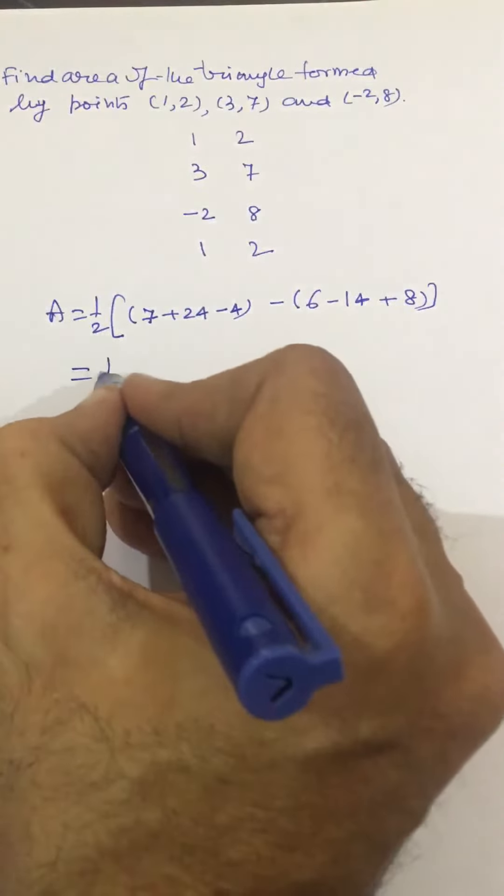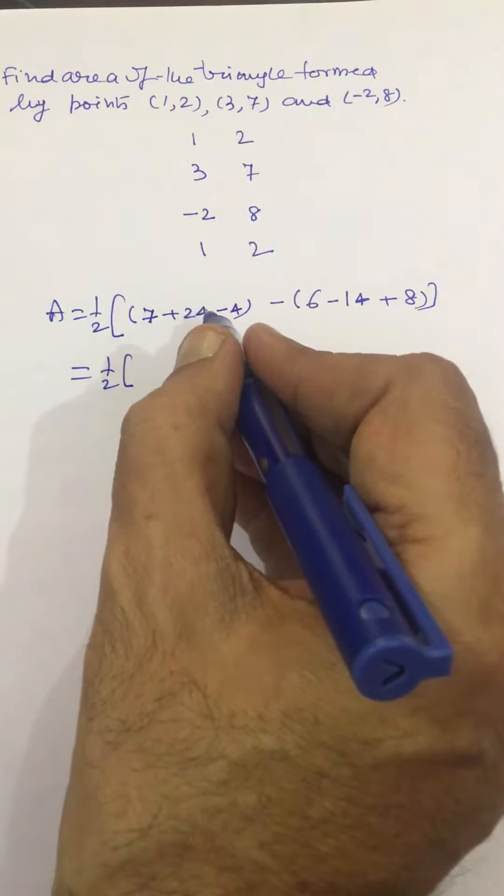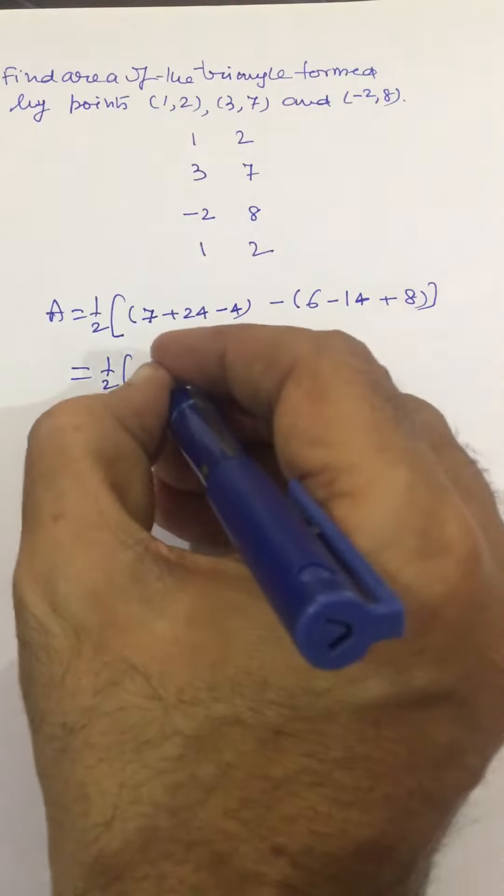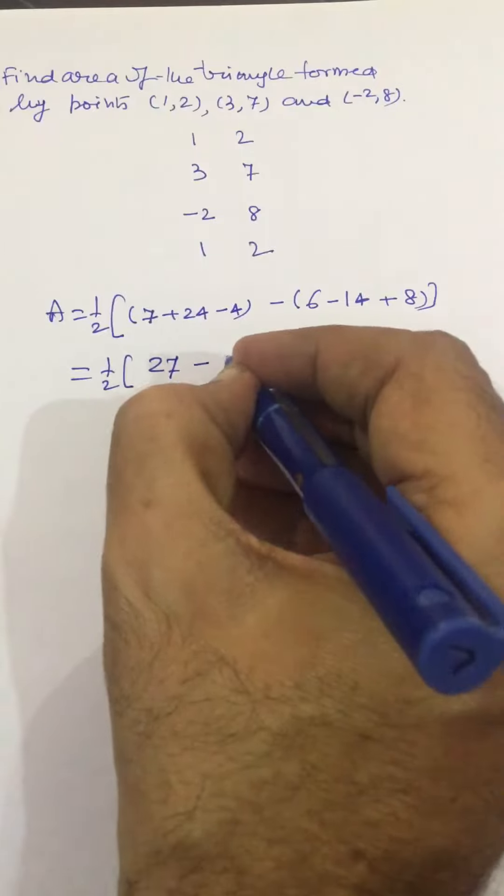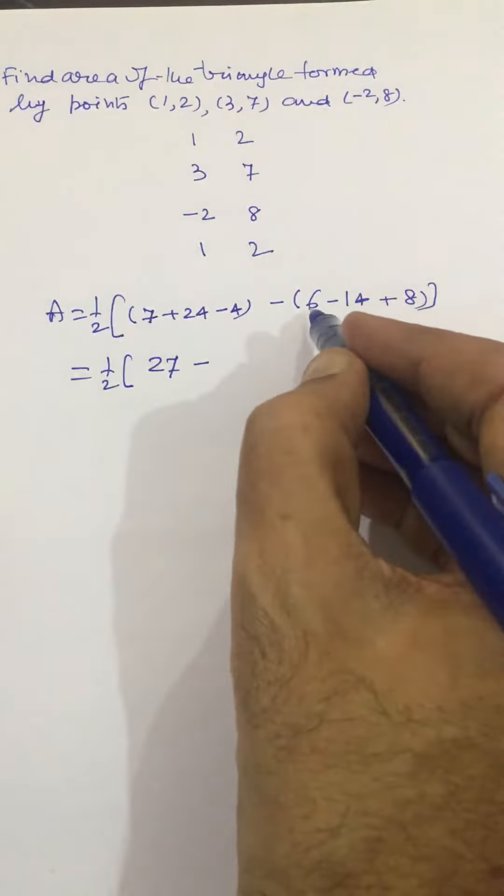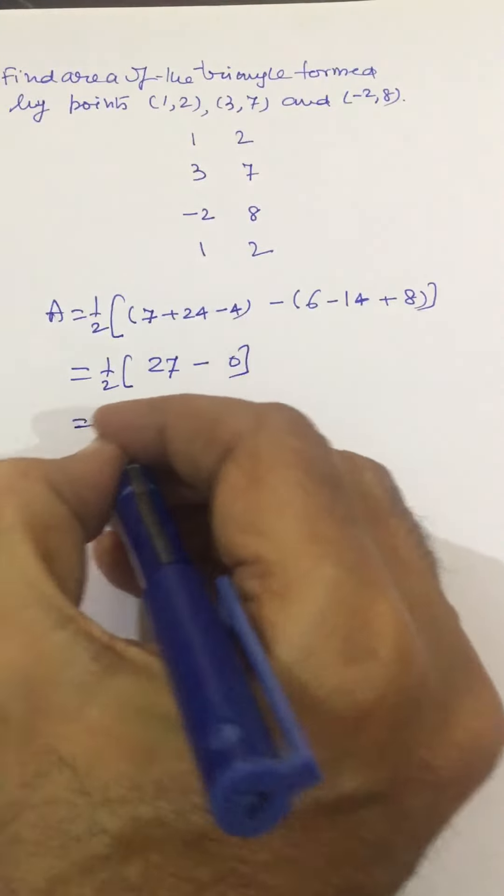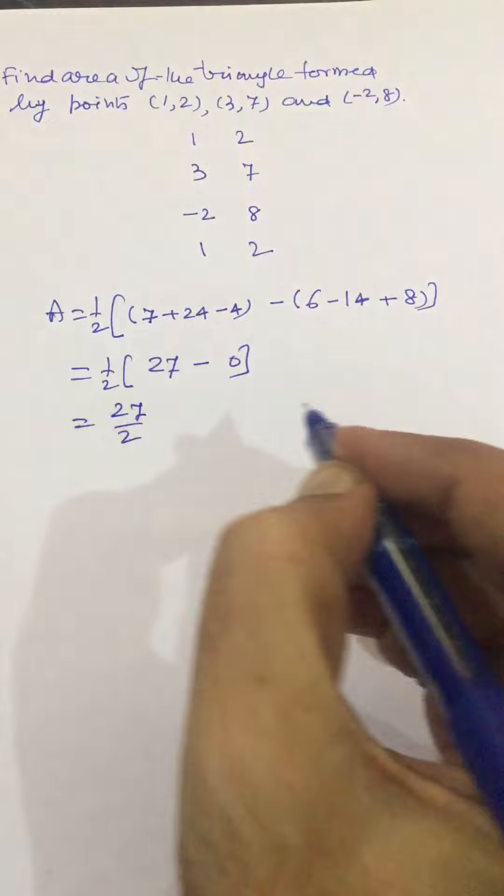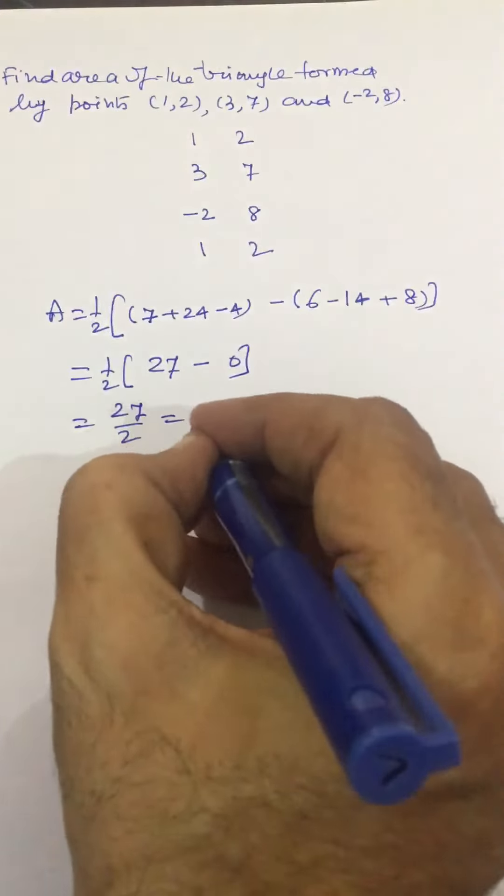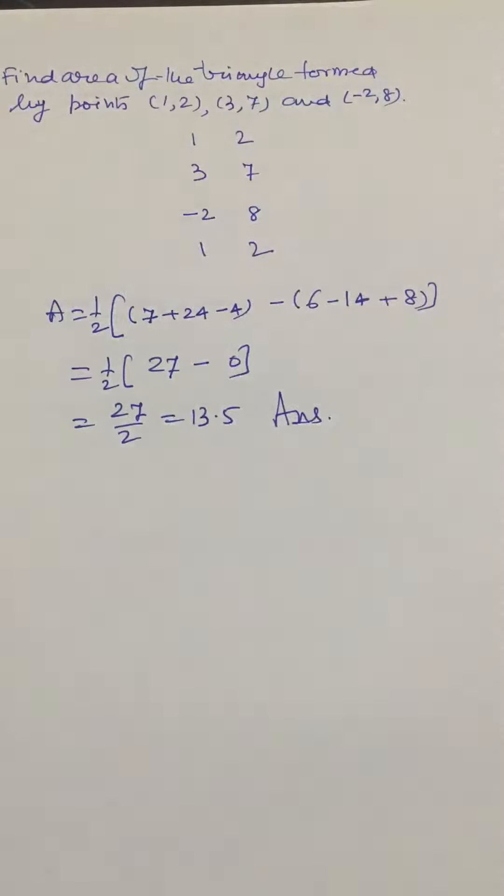Simplifying this, we get 24 plus 7, 31 minus 4, 27. Then 6 plus 8, 14, minus 14, 0. So we get 27 by 2, and this is the area of the triangle.